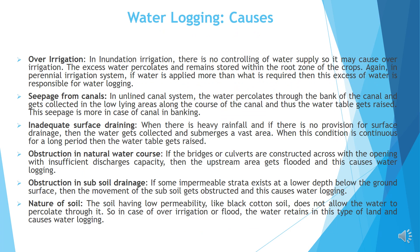The causes of waterlogging. Over-irrigation: In inundation irrigation, there is no controlling of water supply so it may cause over-irrigation. The excess water percolates and remains stored within the root zone of the crops. Seepage from the canals: In unlined canal systems, the water percolates through the bank of the canal and gets collected in the low-lying areas along the course of the canal and thus the water table gets raised.